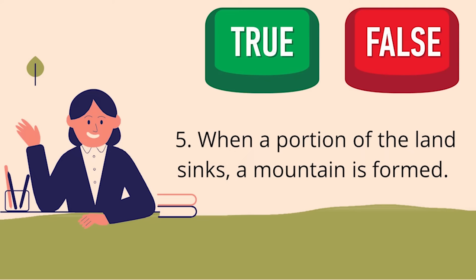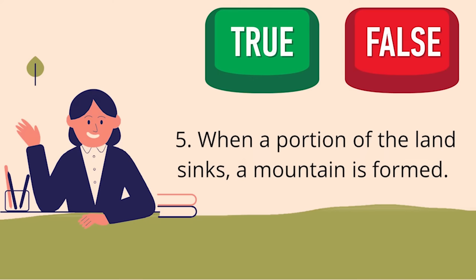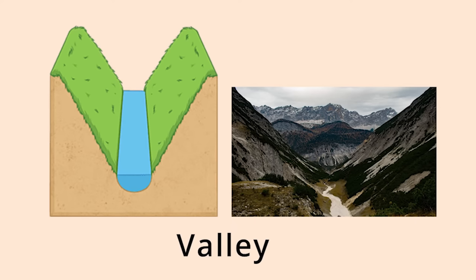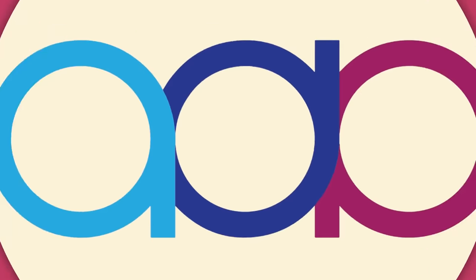Number 5: when a portion of the land sinks, a mountain is formed. That is right! The statement is false. A mountain is a large mass of land that rises above the ground, while a valley is a lower part of the land between two higher parts which might be mountains or hills. Did you get the correct answer? Then you are doing a great job!